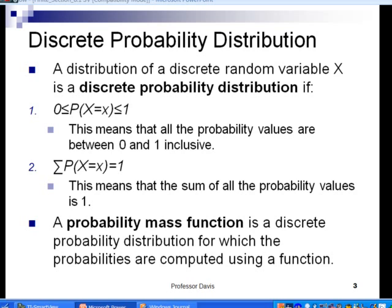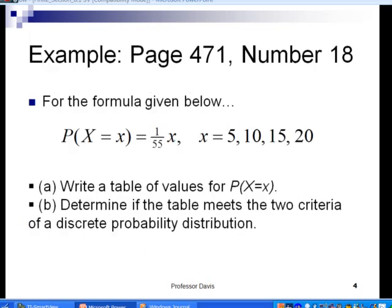And second, if you add up all the probabilities in the right-hand column, you have to get exactly 1. The sum of all the probabilities of the values of the random variable x must be equal to 1. And we can say that a probability mass function is a discrete probability distribution for which the probabilities are computed using a function. Sometimes we can compute a discrete probability distribution for data, but sometimes we can be given an actual mathematical function, and that can help us find the probability distribution for it.